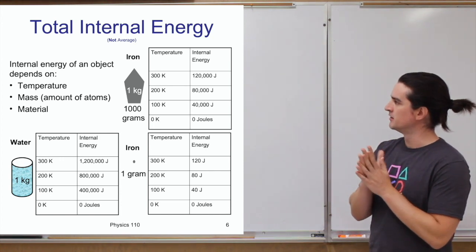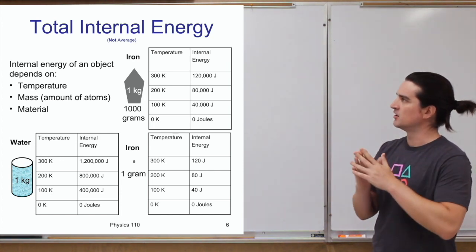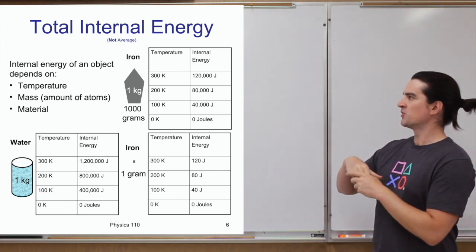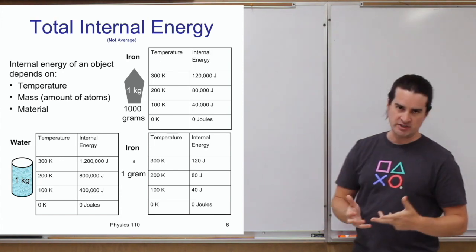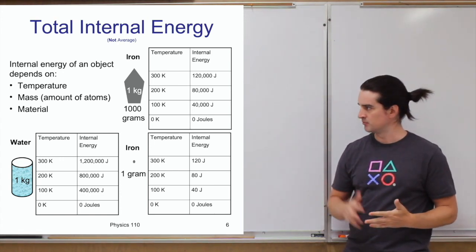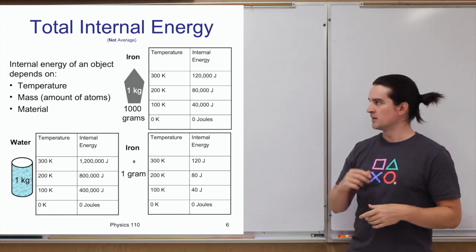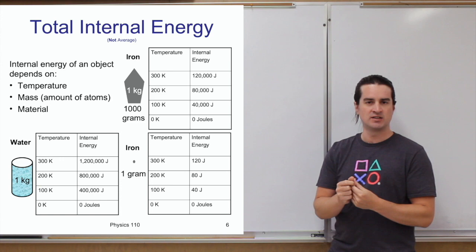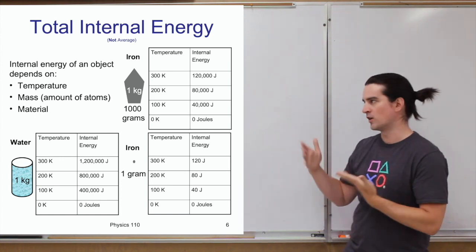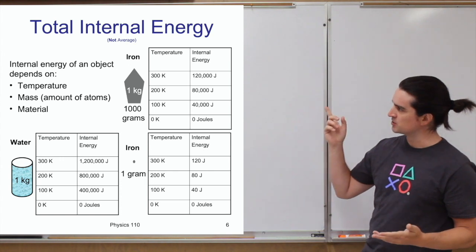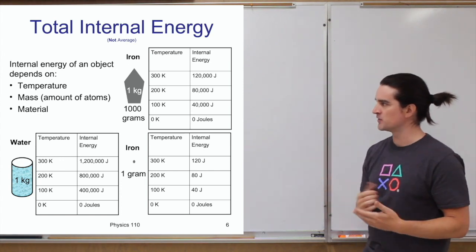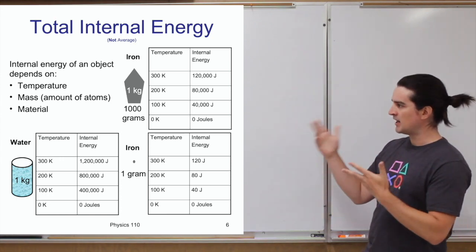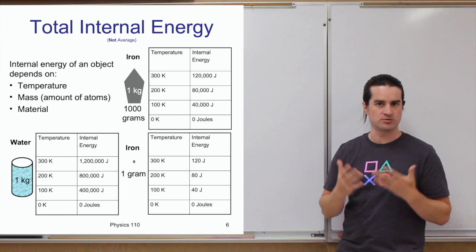Let's compare total internal energy in more detail. The total internal energy in any material depends on the temperature, how much motion each atom has, how many atoms there are, and what kind of atoms they are. So total internal energy depends on temperature, mass (the amount of material), and the material type — what kind of atoms or molecules they are.